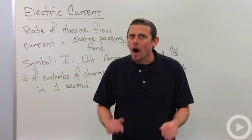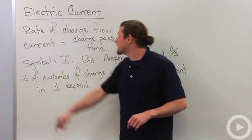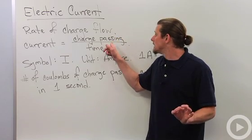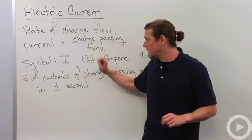Whenever I've got charge moving I've got an electric current. So current is equal to charge passing by a given point divided by how long it took that charge to pass by that given point.